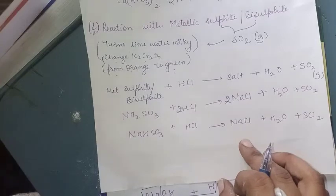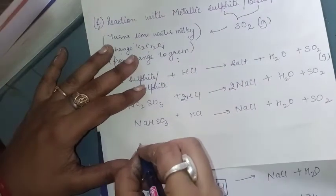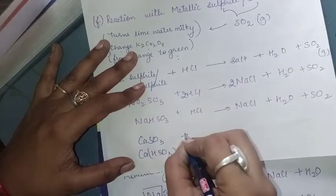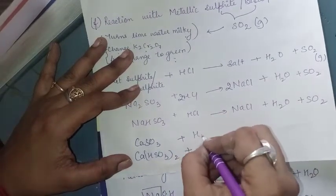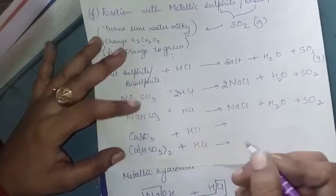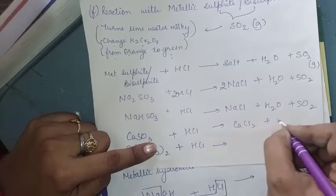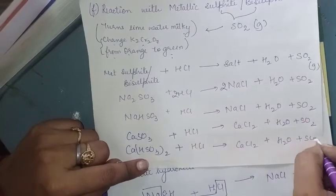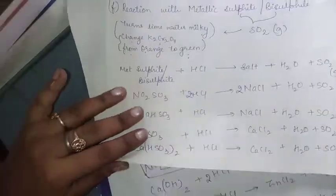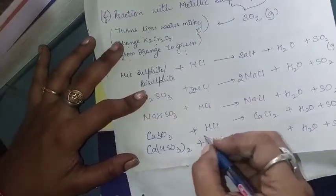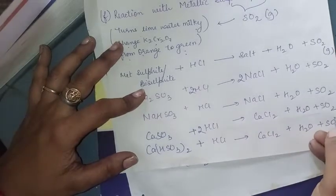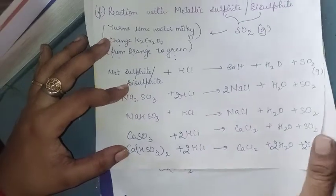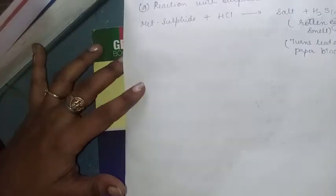Calcium sulfite and calcium bisulfite reactions with HCl: CaSO₃ + 2HCl → CaCl₂ + H₂O + SO₂. Ca(HSO₃)₂ + 2HCl → CaCl₂ + 2H₂O + 2SO₂. Additional reactions with potassium sulfite and bisulfite can also be practiced from other textbooks. Balancing requires substituting 2 in front of HCl for the sulfite reactions.